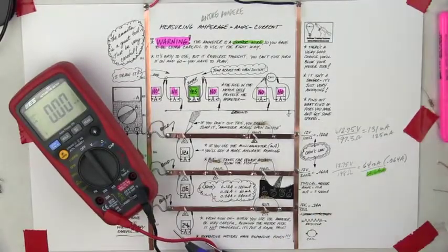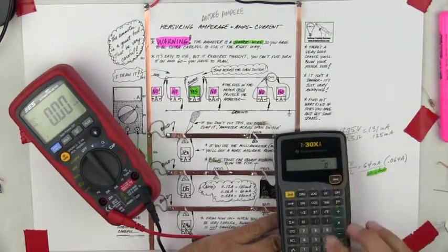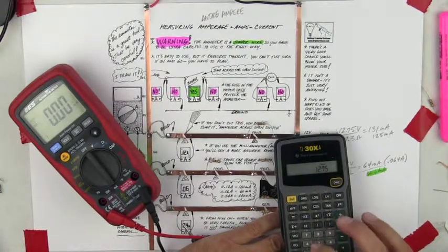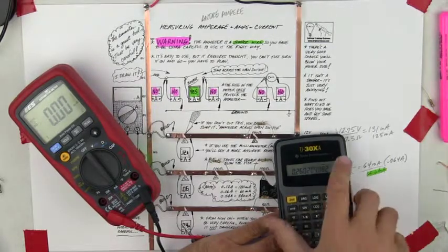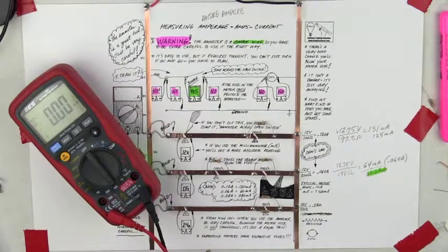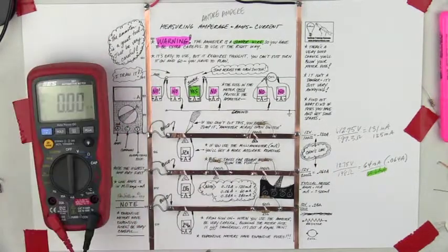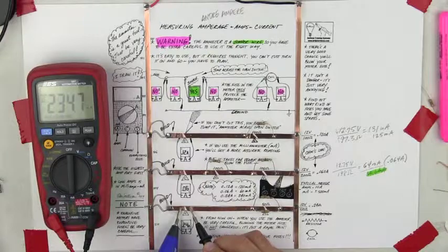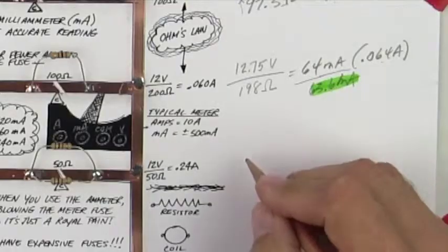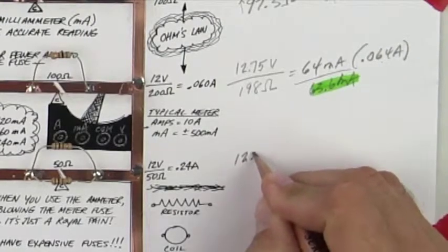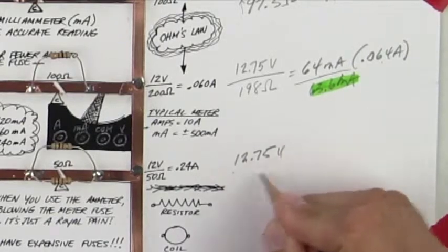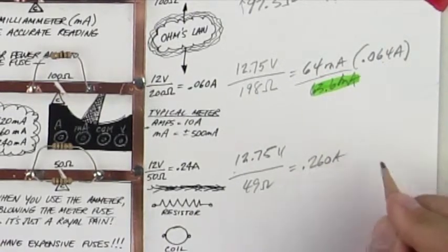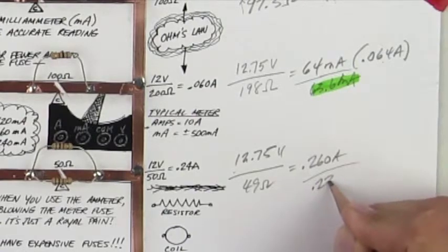And if we do the math, we'll do, again, so you can see this here, we'll use 12.75 divided by, that was 49, 0.026, so that'd be 260, sorry, 260 milliamps. So let's see if we get roughly 260. Remember, polarity, don't accept a negative number. We get 234, so we're off by a little bit. So we're a little bit off. So the 12.75 volts divided by the 49 ohms gave us 0.260 amps, and we're getting 0.234.